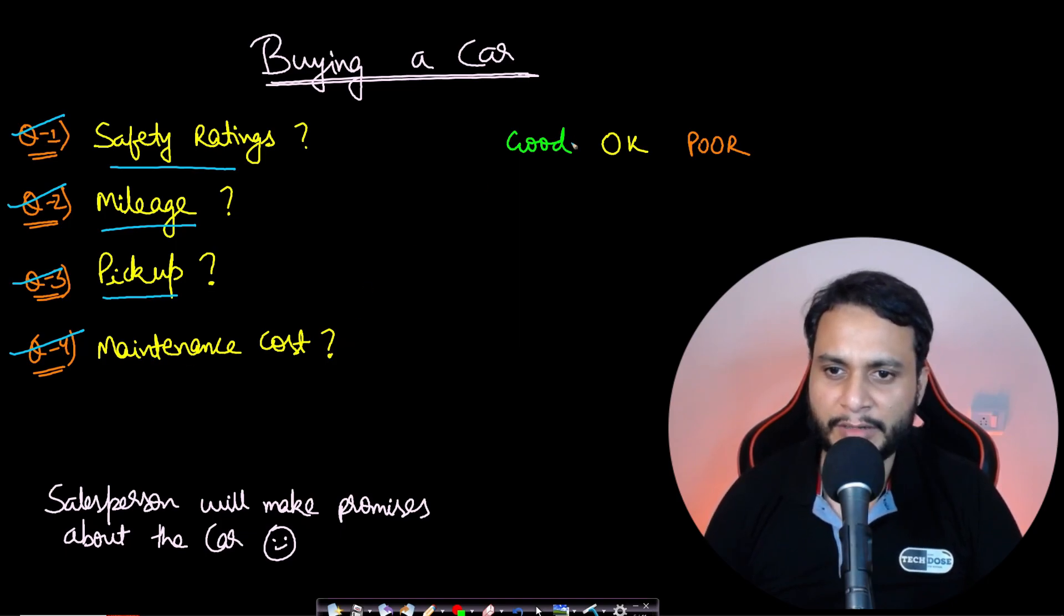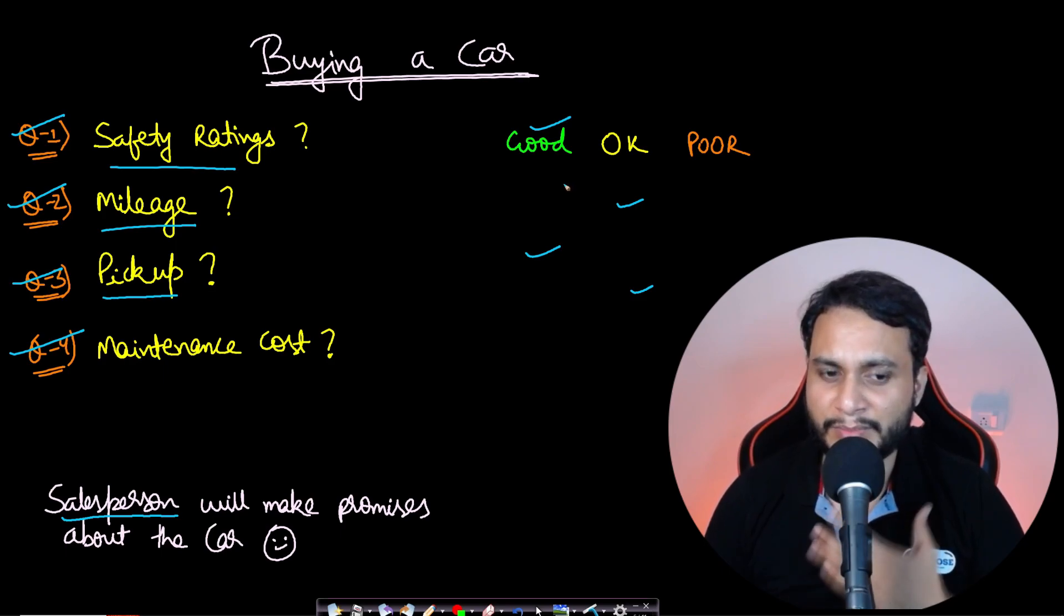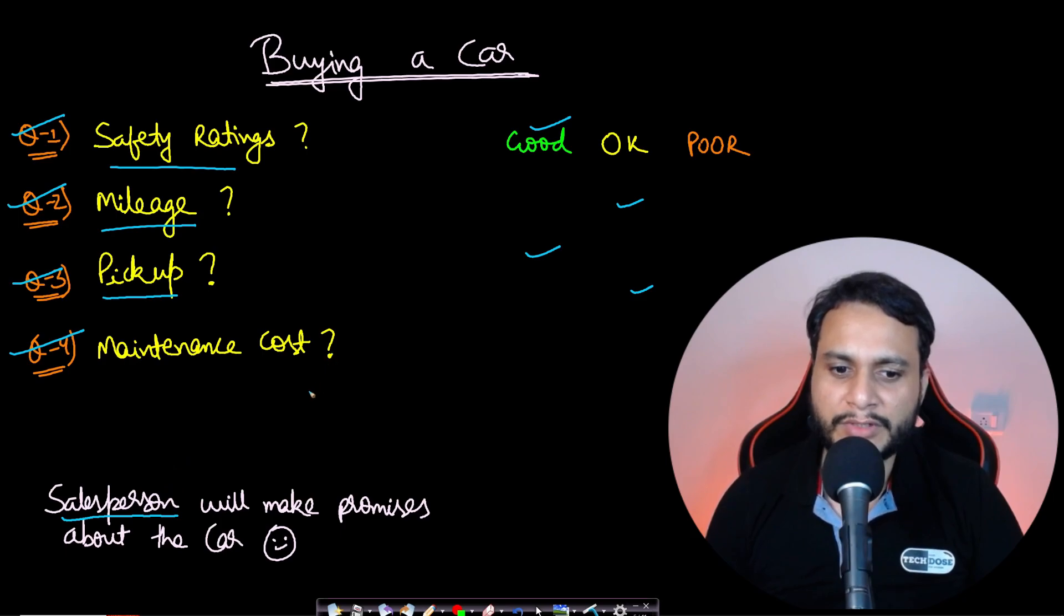And then we can talk about the maintenance cost. On a scale of three - good, okay, and poor - the salesperson will try to make some promises to you. He can say that the safety ratings are good, the mileage is okay, the pickup is good, and the maintenance cost is okay. These are all the promises which the car vendor is making, and the salesperson is representing the car vendor. These all can be thought of like a service level agreement.